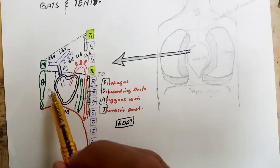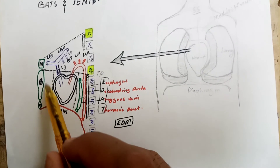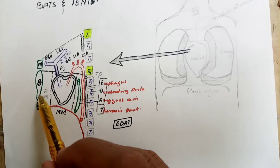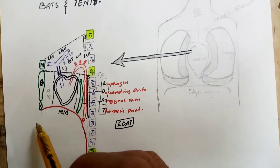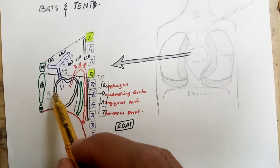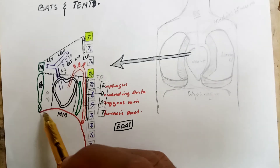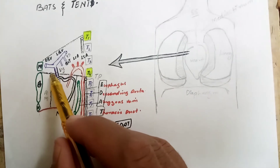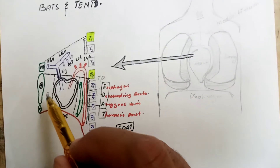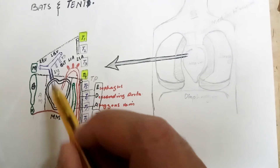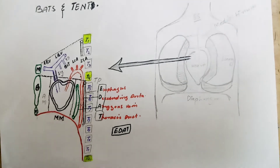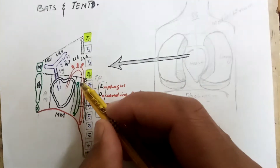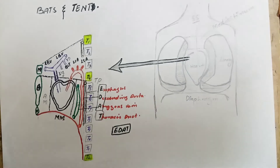The anterior mediastinum is the area just anterior to the pericardium of the heart. Its boundaries are: anteriorly by the body of the sternum and xiphoid process, posteriorly by the pericardium of the heart, inferiorly by the diaphragm, and superiorly by the thoracic plane. The contents of the anterior mediastinum are fat, lymph nodes, and the internal mammary artery, which is a branch of the subclavian artery.